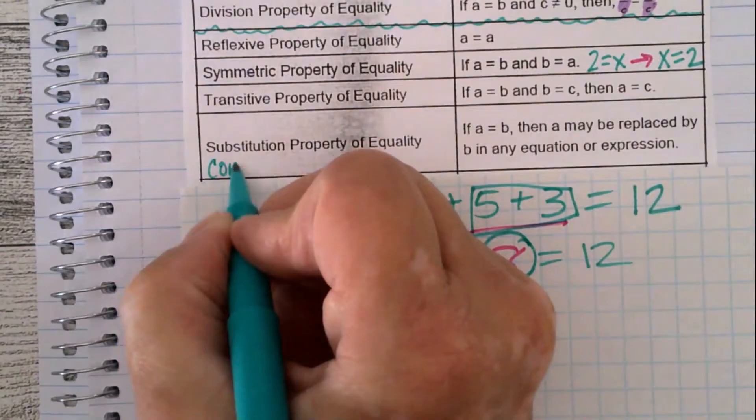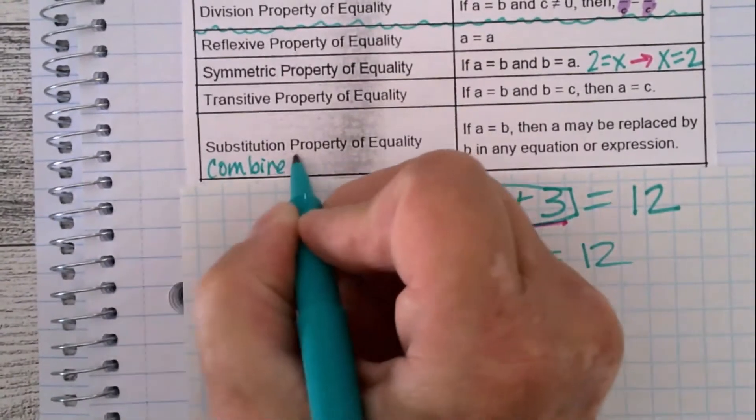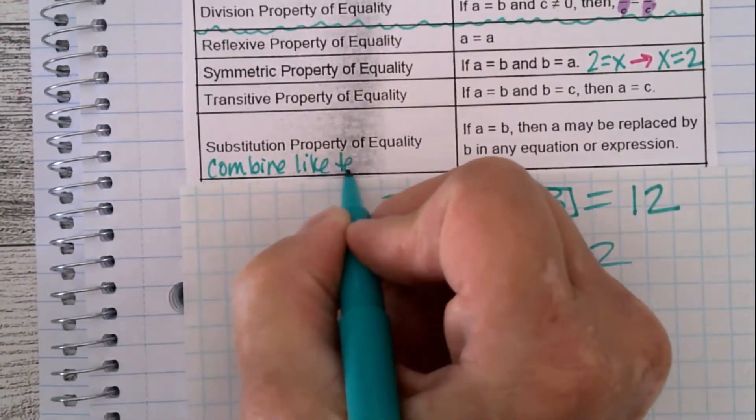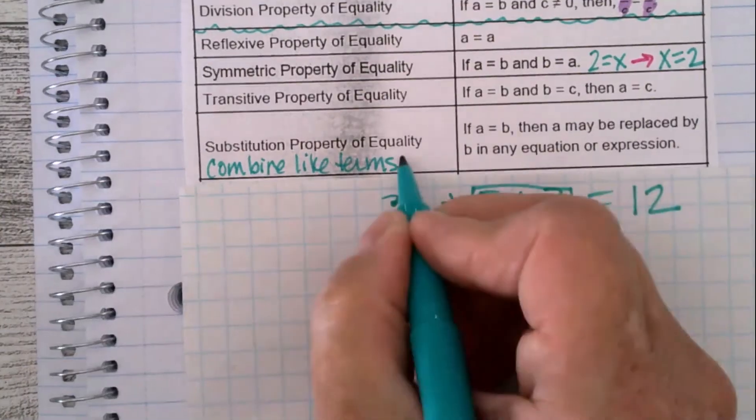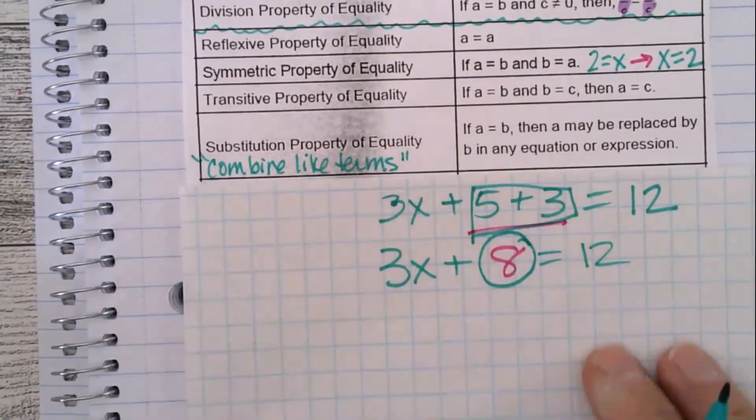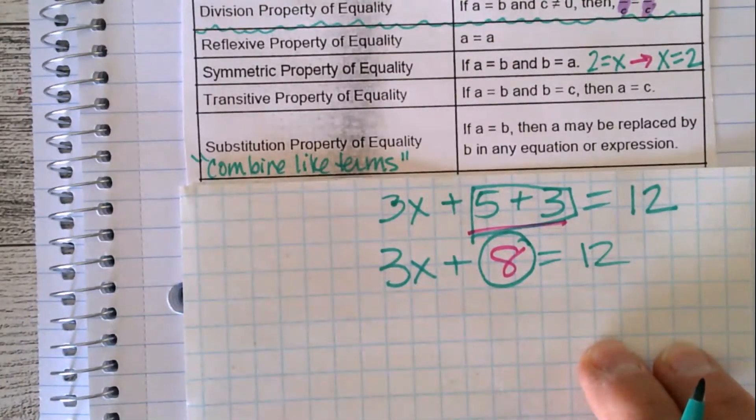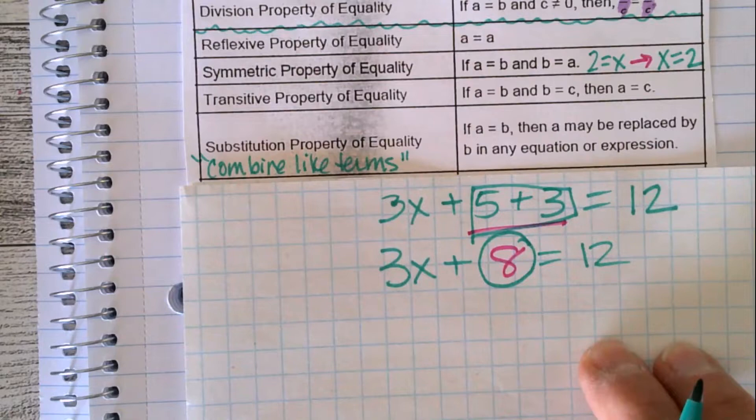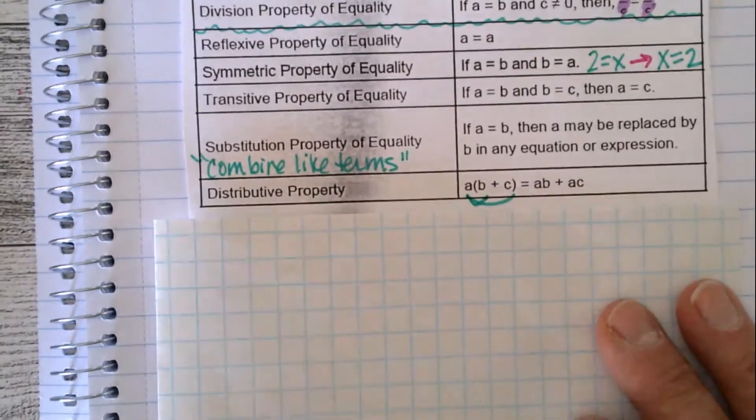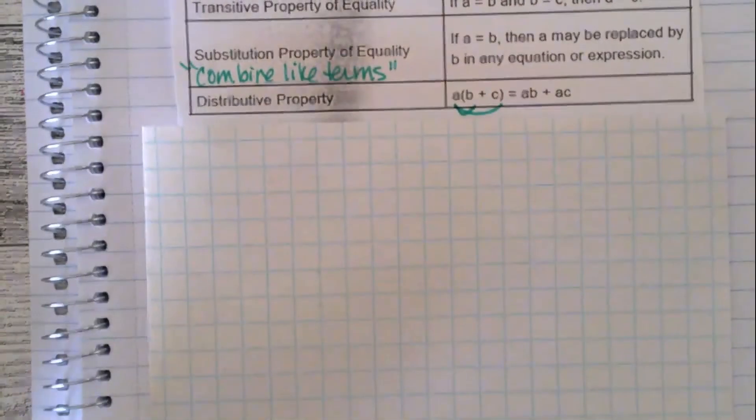Whenever you're combining like terms or simplifying, you are substituting. The 8 was now substituted for the 5 plus 3. So if you're doing a proof in geometry where it's an algebraic proof and you have to do something where you are combining like terms, if you think to yourself that's what you're doing, then the reason you're allowed to do that, the law if you want to think of it that way, is the substitution property of equality. Distributive property, well, we know that one. We will use that one today, too.